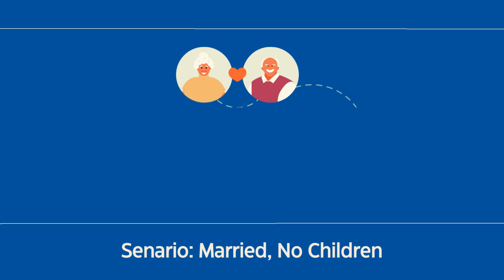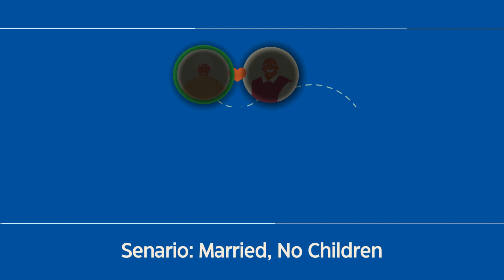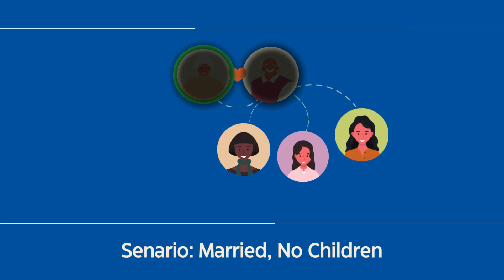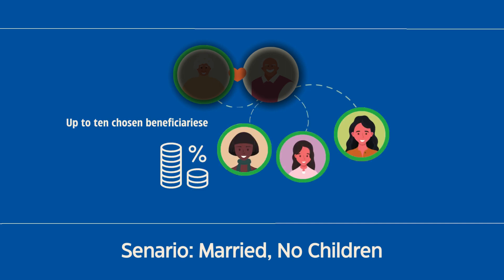Now, let's move to the scenario where you have a spouse or a person you plan to marry, but no children. In this case, the app requires you to leave your residue to your spouse. If your spouse or the person you plan to marry dies before you, or you die together, your backup beneficiaries — up to 10 people you choose — will receive the residue.